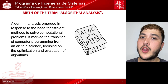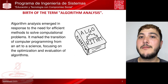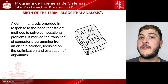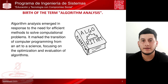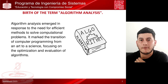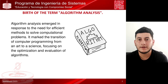First, we will discuss the origin of the term algorithm analysis. This dates back to 1959, when the ACM began publishing and its editorial board discussed the transition of programming from an art to a science. It is interesting to note that in 1970 there were already discussions about the initial steps to transform the art of programming into a science.